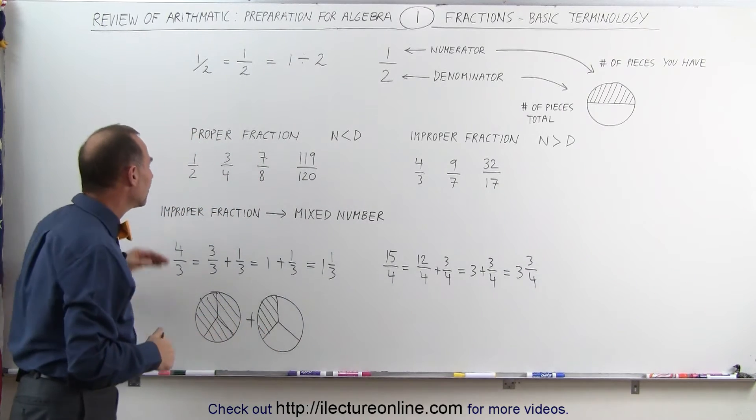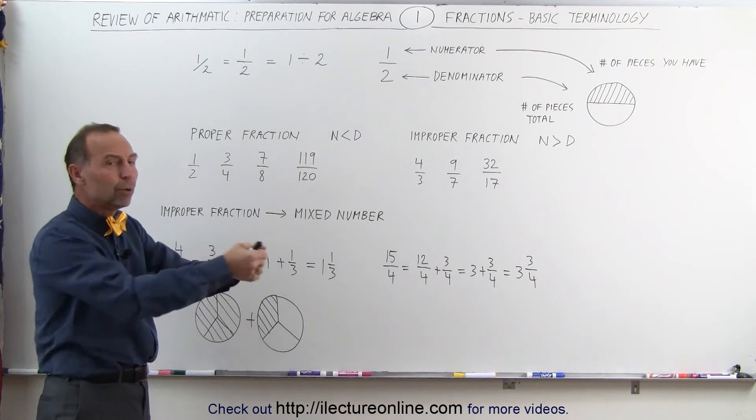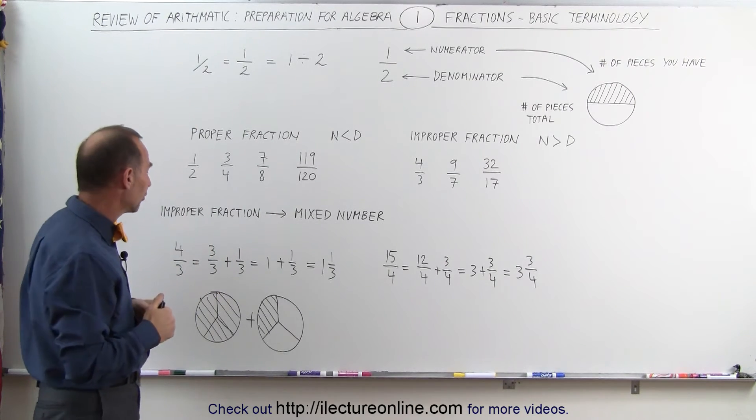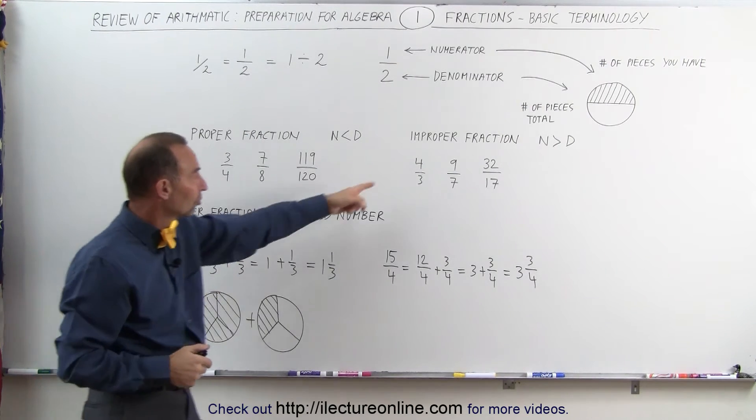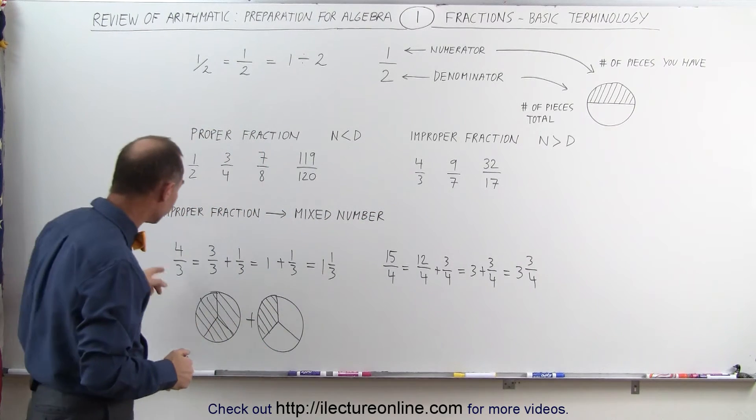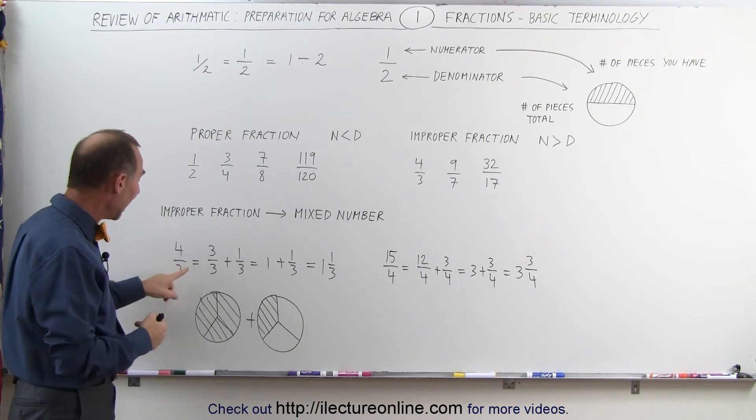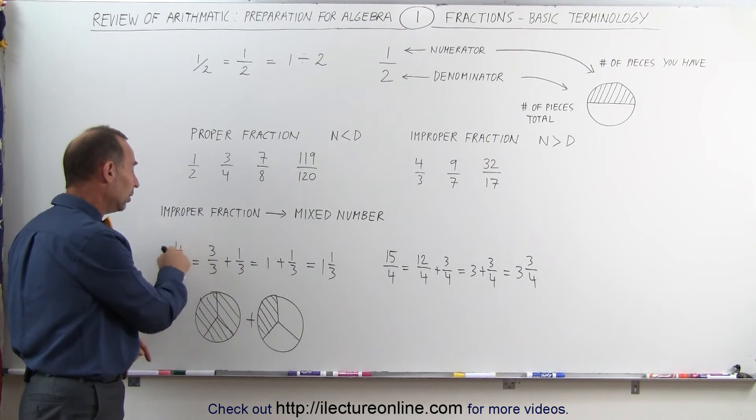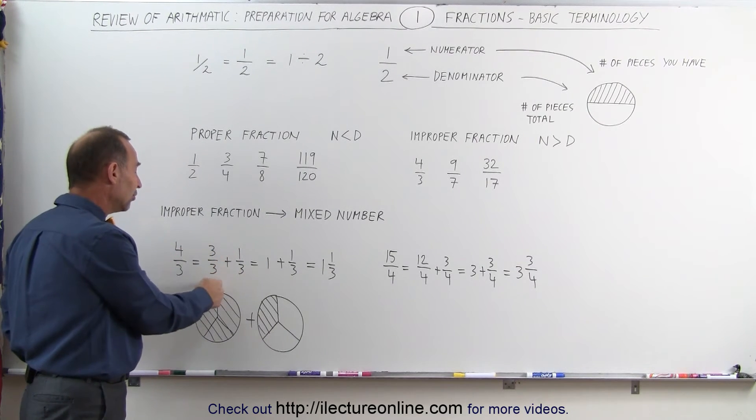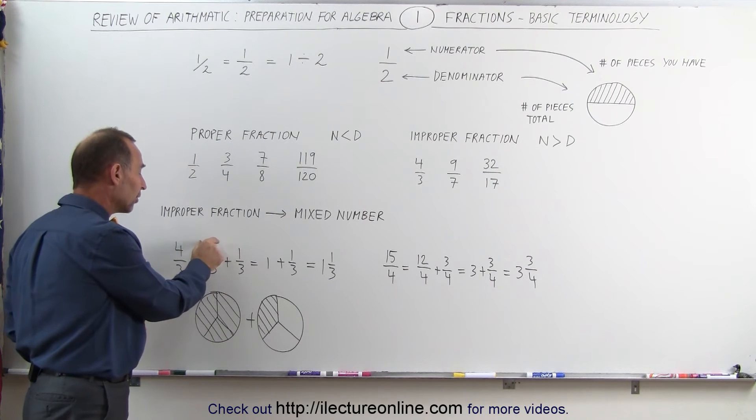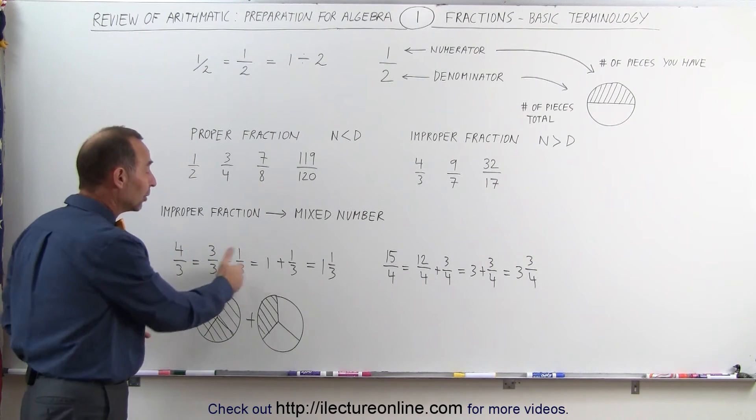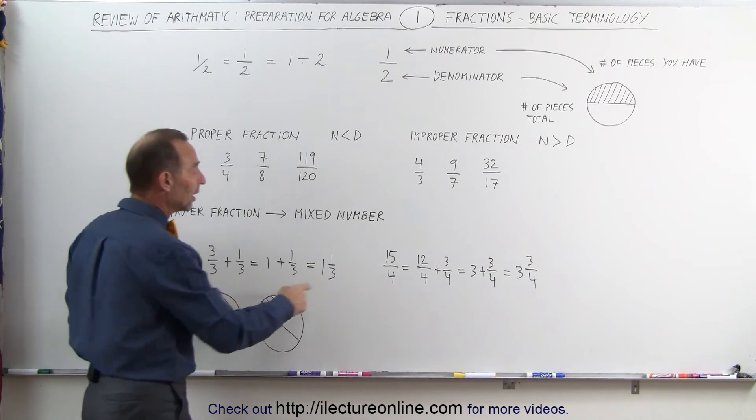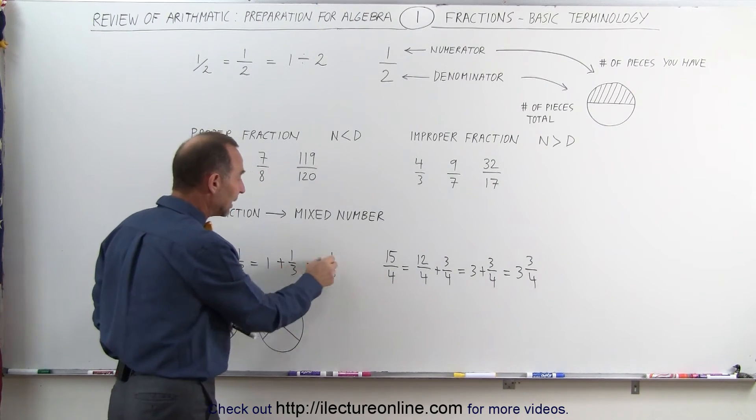Improper fractions can be turned into what we call mixed numbers. We can pull out the whole integer out of an improper fraction. For example, the number 4 thirds can be thought of as 3 thirds plus 1 third. 3 plus 1 is 4, but if we separate it like this, you can see that 3 thirds—if the number at the top and the bottom is the same—is equal to 1. So this becomes 1 plus 1 third, which is written as 1 and a third.